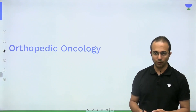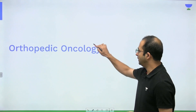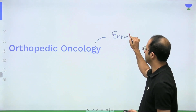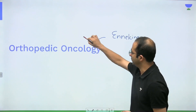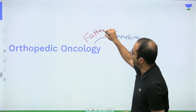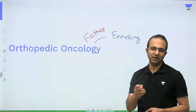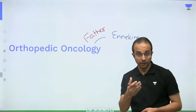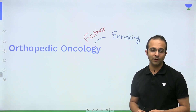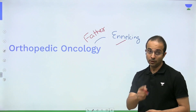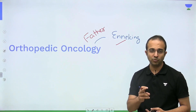Let me quickly start with the tumors of the bone, but before that let me share an interesting thing with you. This gentleman — Enneking — he is called the father of orthopedic oncology. I'm telling you this because I really hate him. Years back when I gave my All India exam, there was a question: who is called the father of orthopedic oncology? And this person snatched away a few ranks from me because I didn't know his name.